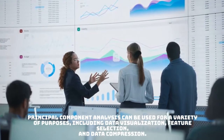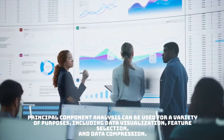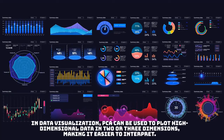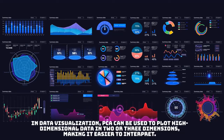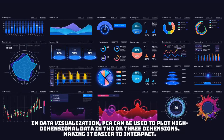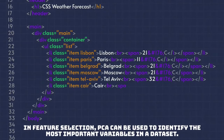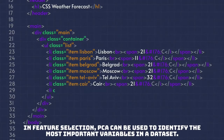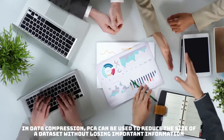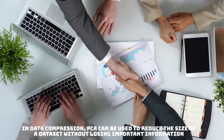PCA can be used for a variety of purposes. In data visualization, PCA can plot high-dimensional data into two or three dimensions, making it easier to interpret. In feature selection, PCA identifies the most important variables in a dataset. In data compression, PCA reduces the size of a dataset without losing important information.